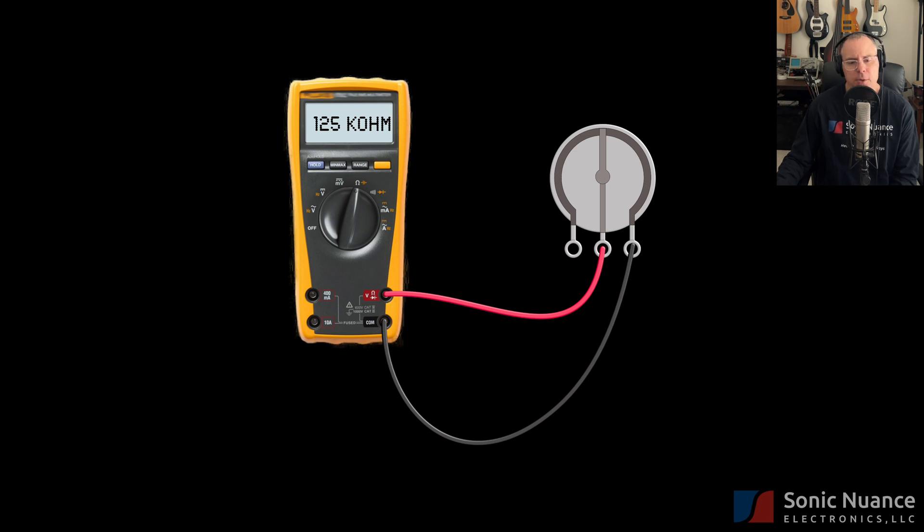Now, if we go from the wiper to this outer terminal here and have the shaft so that it's all the way here, then we are going to measure all of this resistance. And it's going to be 250k ohms. Let's see what happens as we move the wiper around. You can see that the resistance is actually decreasing because the amount of resistive material between the two terminals is reducing as the wiper moves. And as we go the opposite direction, it increases.